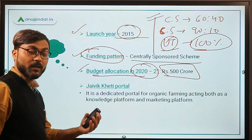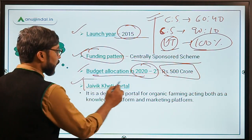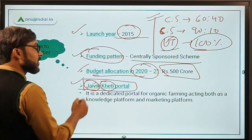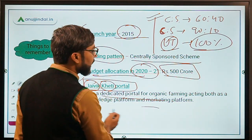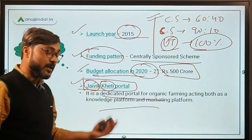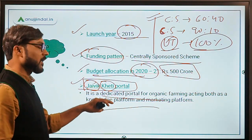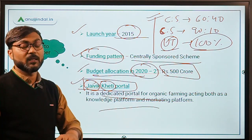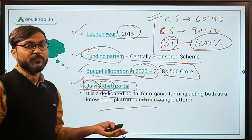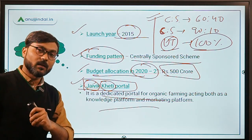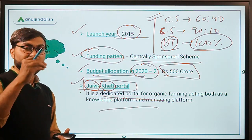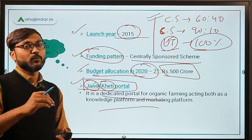The budget allocation in this year's budget is Rs. 500 crores to promote Paramparagat Krishi Vikas Yojana. There is a dedicated portal called the 'Jaivik Kheti Portal' — 'Jaivik' means organic and 'Kheti' means farming. It acts both as a knowledge platform and a marketing platform where farmers can list their organic produce and consumers can buy organic products.